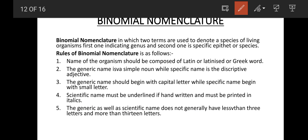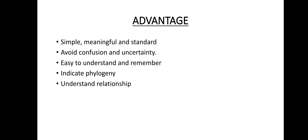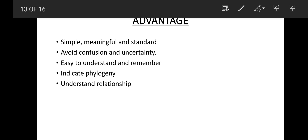The advantages of binomial nomenclature are that it is simple, meaningful, and standard; it avoids confusion and uncertainty; and it is easy to understand and remember. It also helps to understand the relationships between species, subspecies, classes, and superclasses.